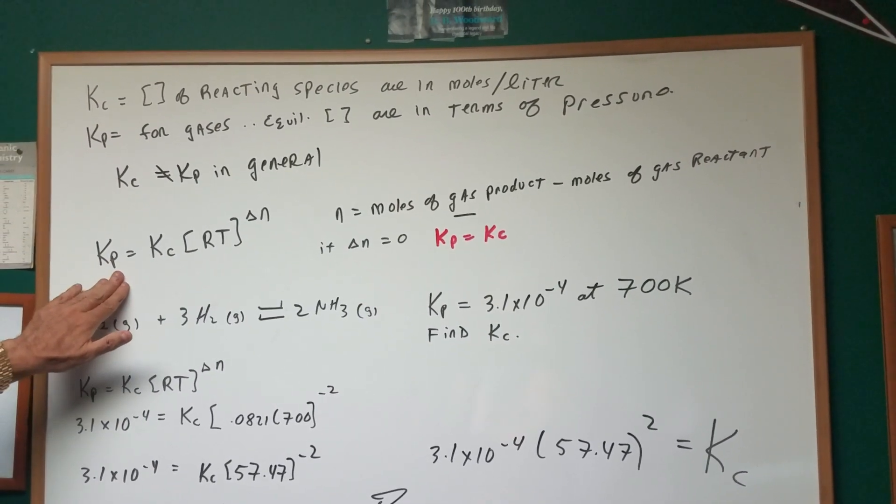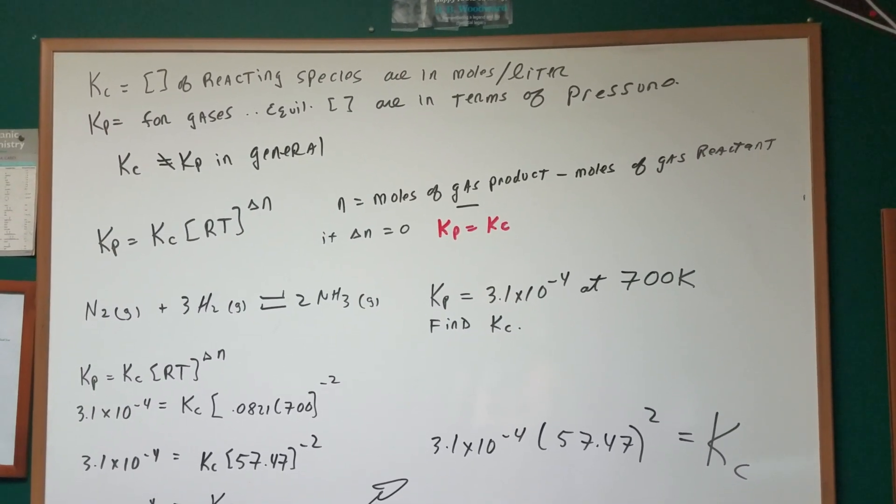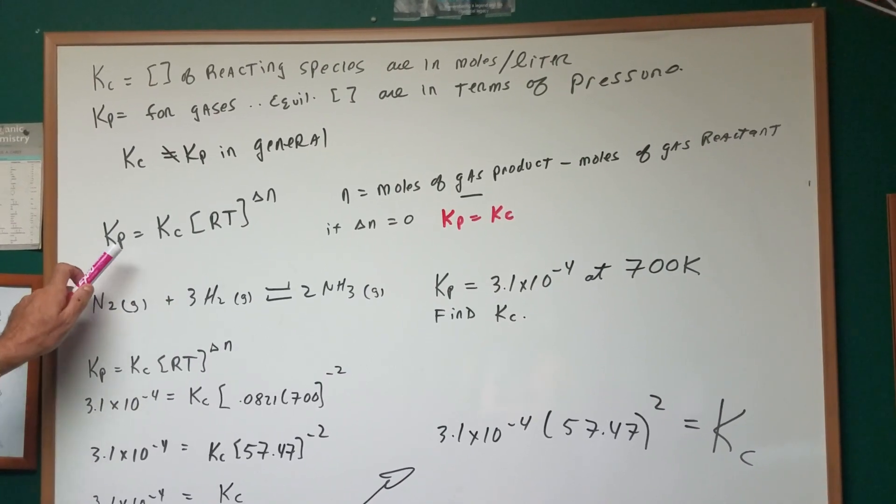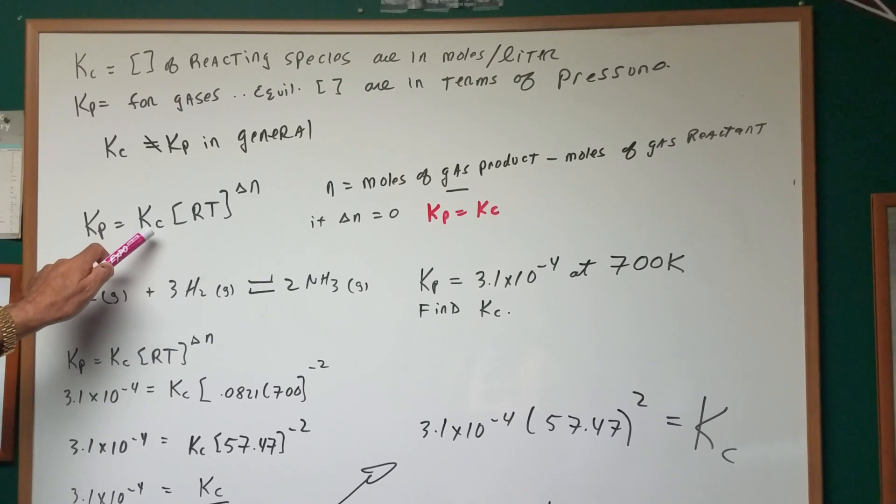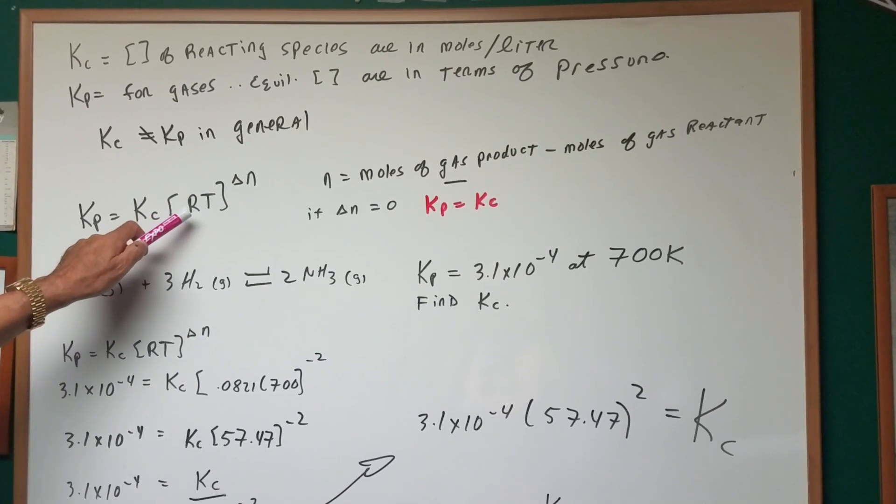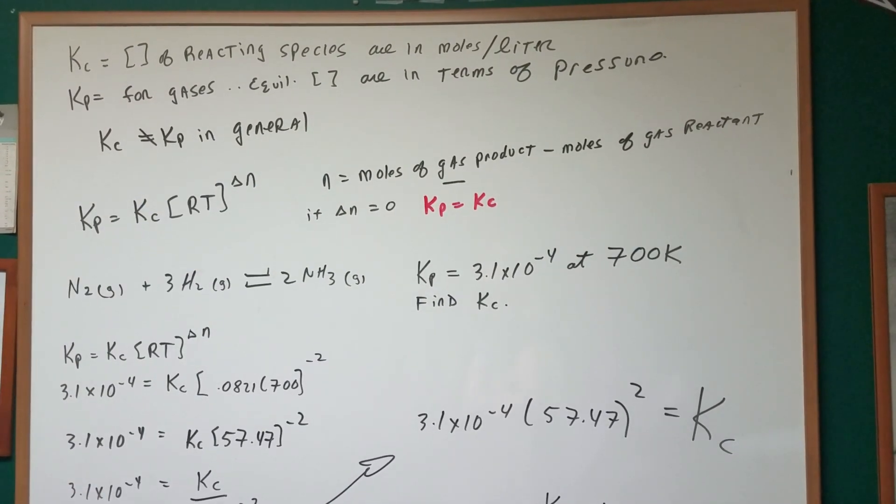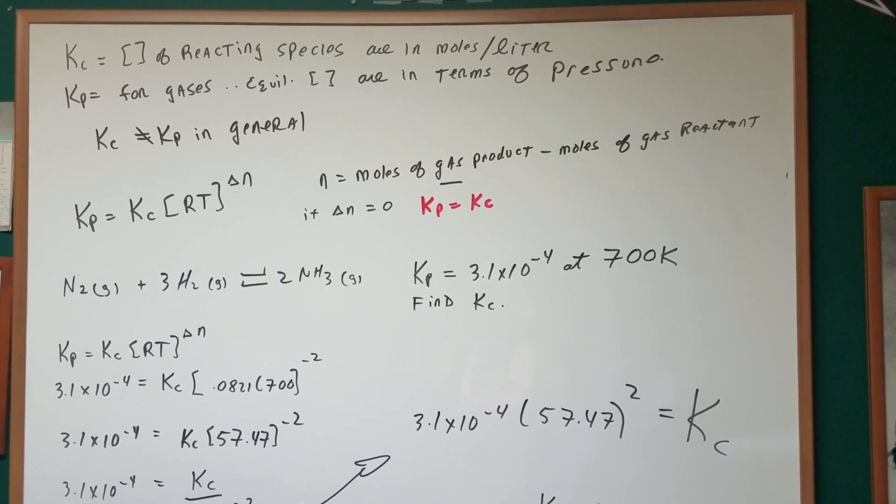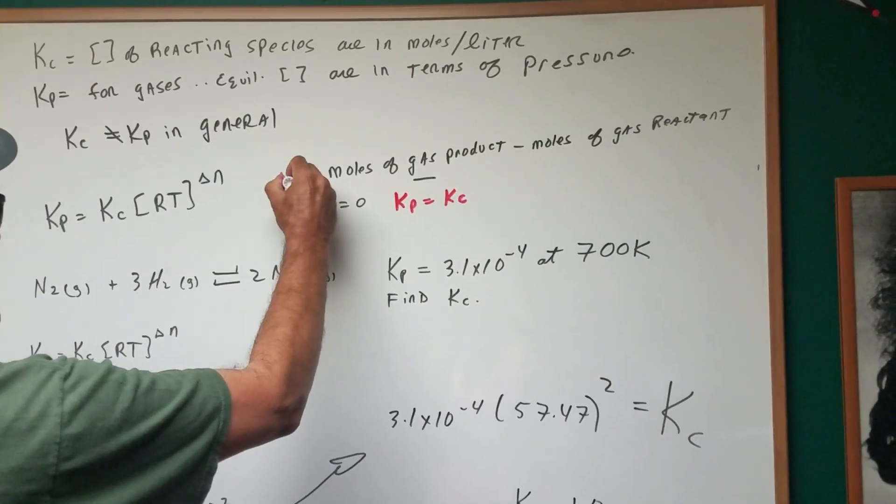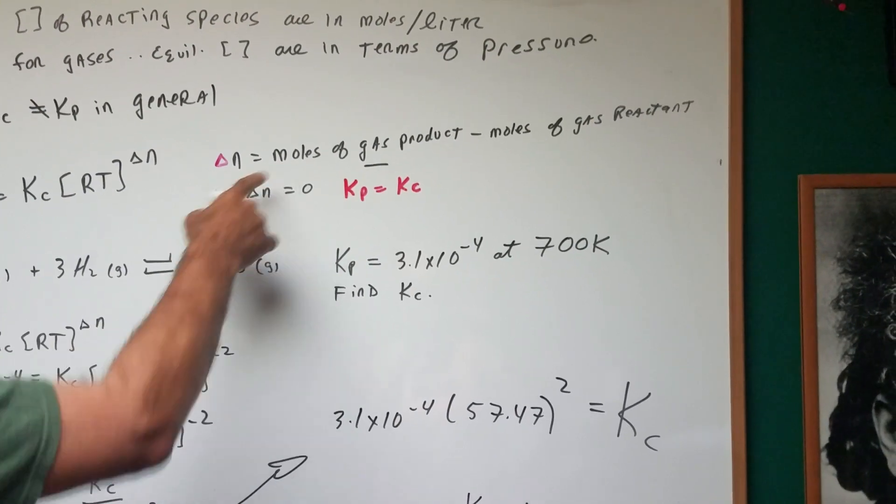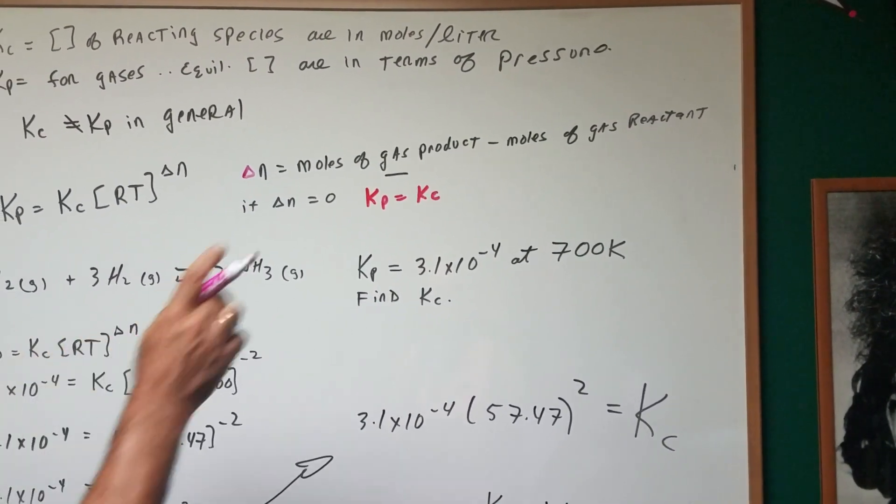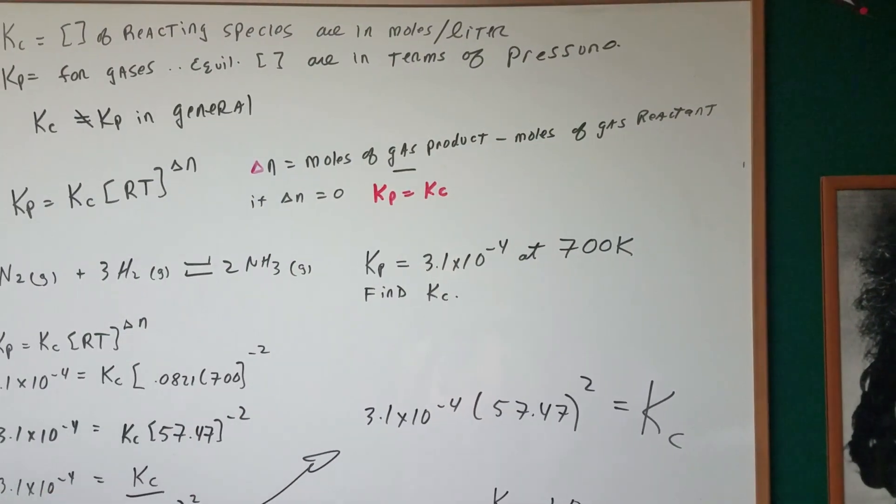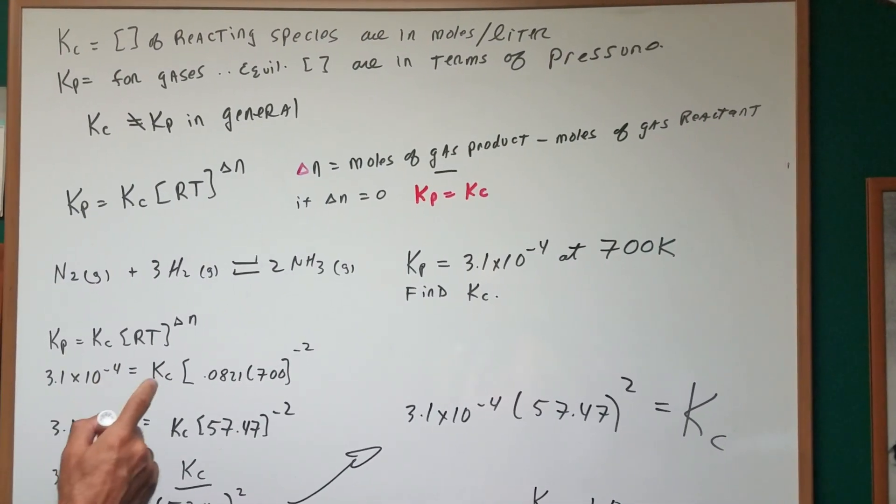Here's a formula that we can derive. I'll spare you the derivation. But using the ideal gas law, we can show that the KP is equal to the KC times RT to the delta N. The delta N means the moles of gas product, it's got to be gas, minus the moles of gas reactant.